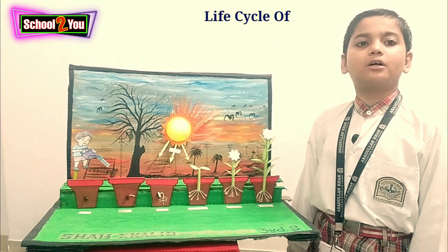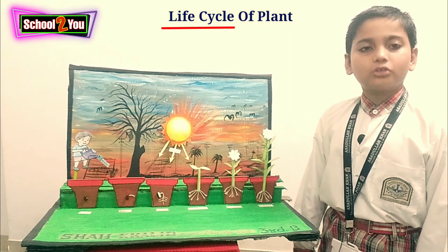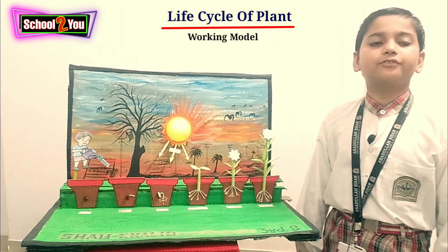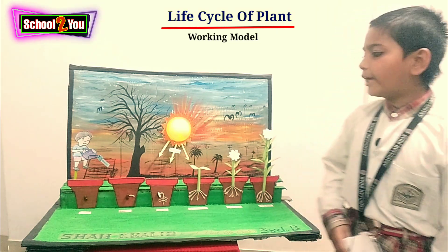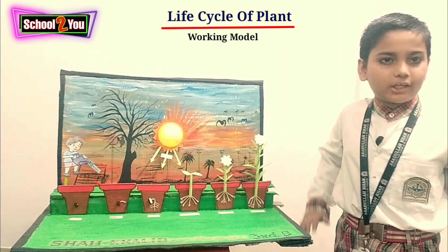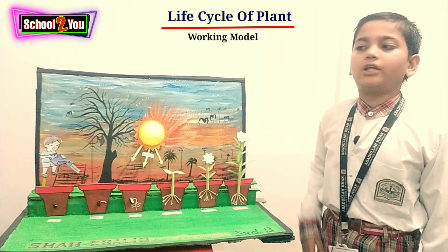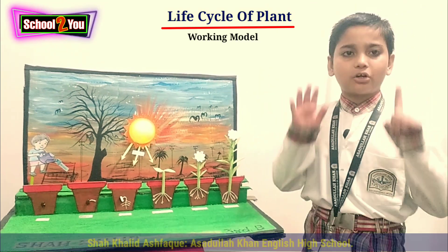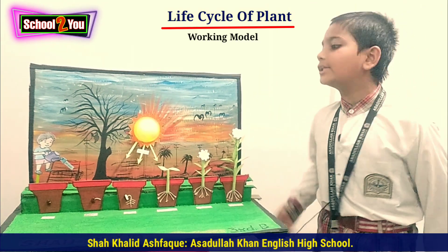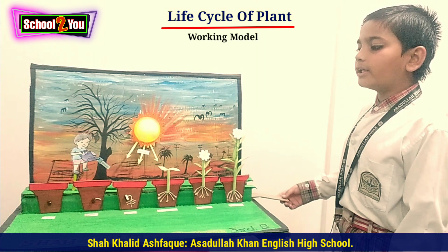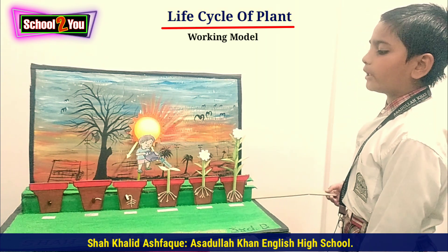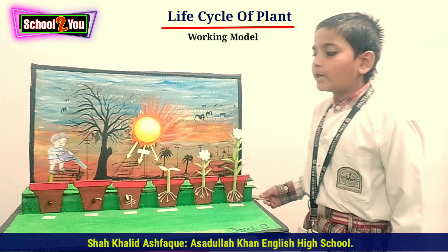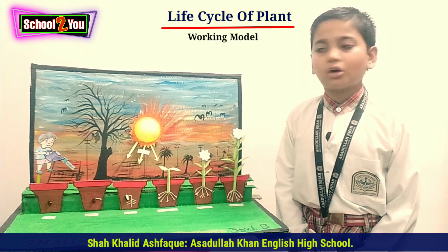Assalamualaikum warahmatullahi wabarakatuh. Good afternoon everyone, my name is Shah Khalid Ashwag, Third B. Life cycle of plant. All living things have a life cycle. This is a life cycle of a plant. The plant life cycle consists of six stages: seed, radical sprout, leaf, stem, root, small plant, and adult plant.